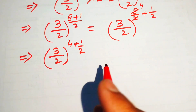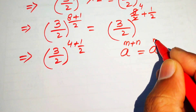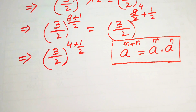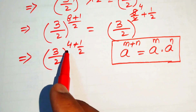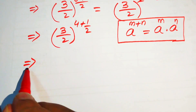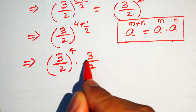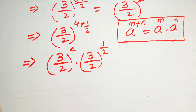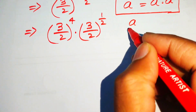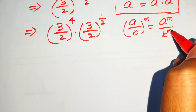We apply the law a^(m+n) = a^m · a^n, breaking the exponent: (3/2)^4 · (3/2)^(1/2). We then apply (a/b)^m = a^m / b^m separately on both terms: 3^4 / 2^4 · (3/2)^(1/2).